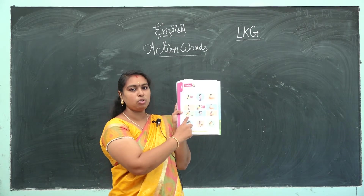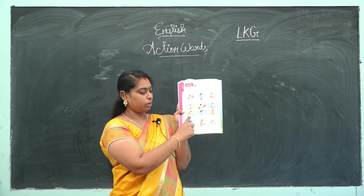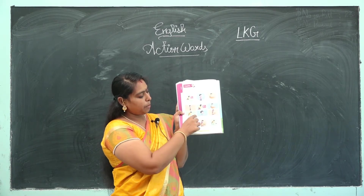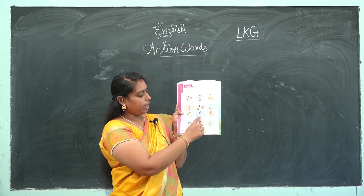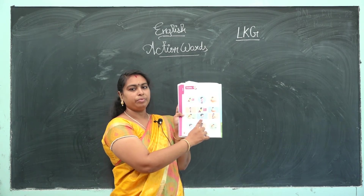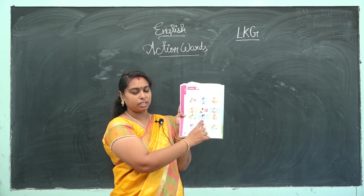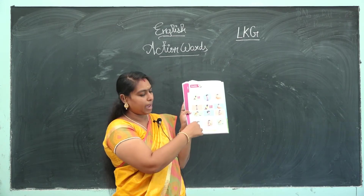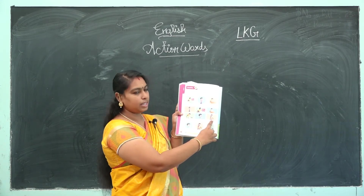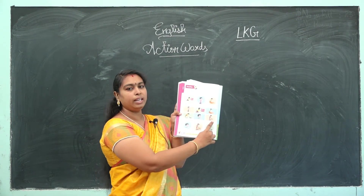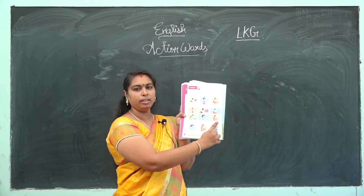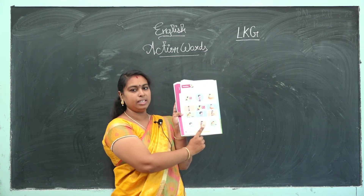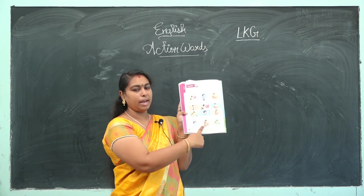Next — what is this boy doing? Mop. Now see where is the picture? Same picture — here it is. Match it. Next — what is this boy doing? Bite. Very good. Where is the picture? Here it is. Then match it. What is this? Clean. What is this boy doing? Clean. Where is the same picture? See, it is here. Then match it.